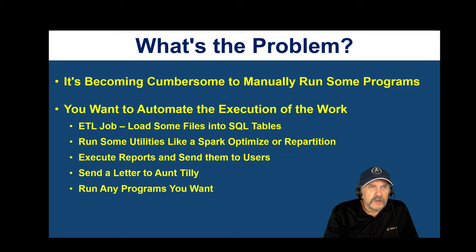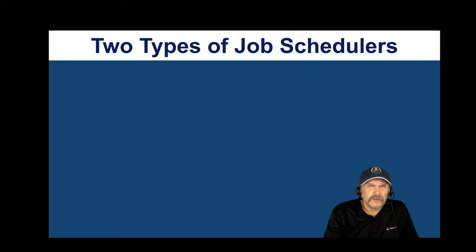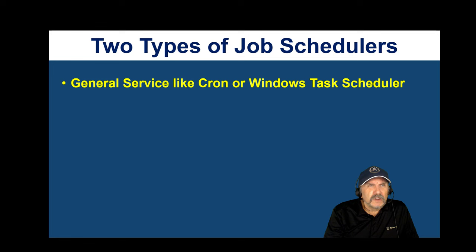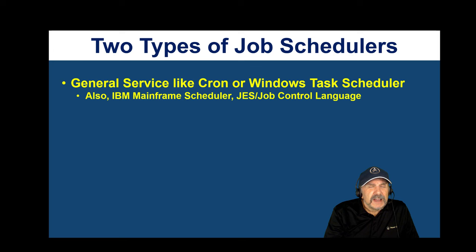You can run any program you want on a job scheduler. There are two types: the general service type, like Cron for Unix or Linux, or the Windows Task Scheduler — it's been around a long time and is basically there to automate anything you want. Going way back, IBM mainframes had excellent job schedulers called JES — the Job Entry System — and a special language called Job Control Language, which to this day I have yet to find an equivalent for.